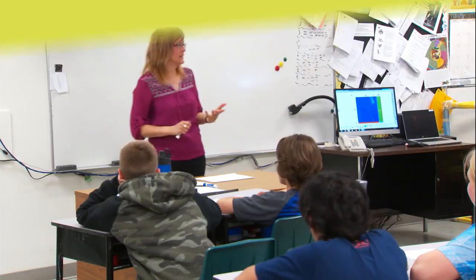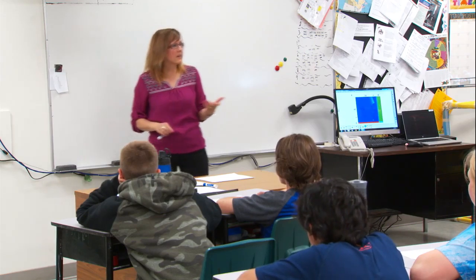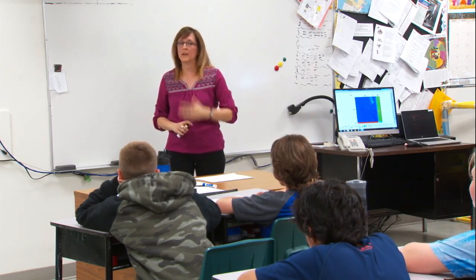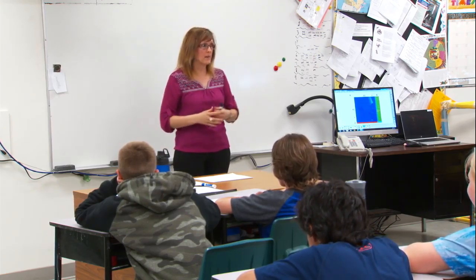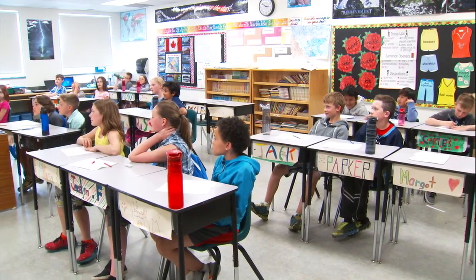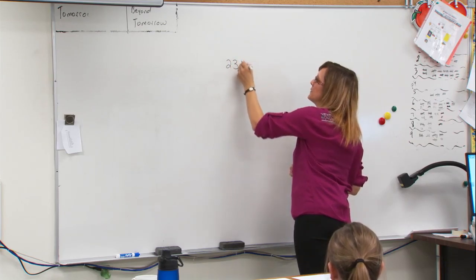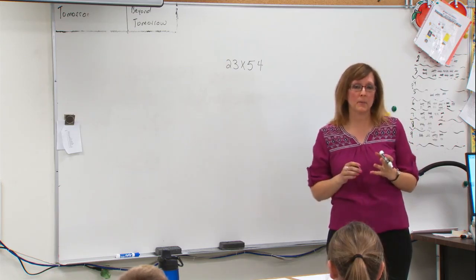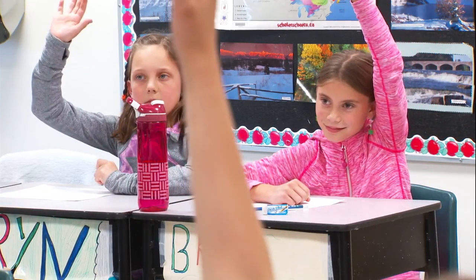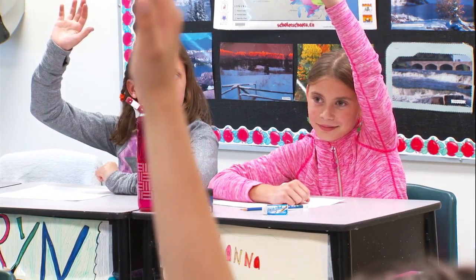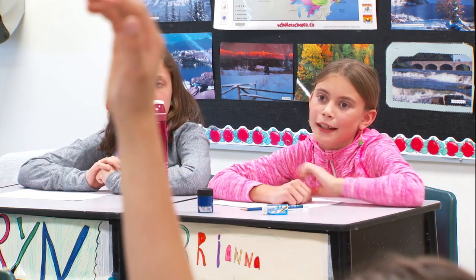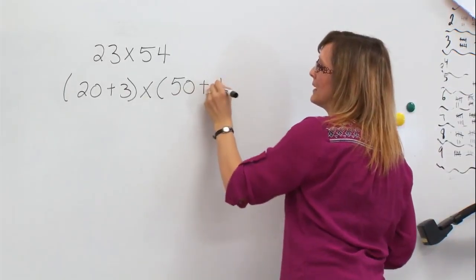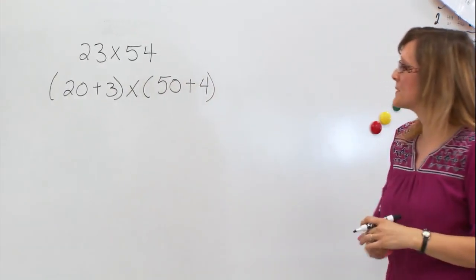Today we're going to look at multiplying these same larger numbers without necessarily needing to draw the array but instead always visualizing one and remembering what the array looks like and how we're breaking up our numbers. The problem we're going to work on today is 23 times 54. So if we were to take this number and break it up into easier parts to work with, what would we break it up into? Brianna? 20 plus 3 times 50 plus 4. Good.